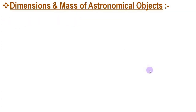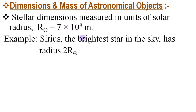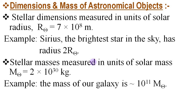To study the dimension and mass of astronomical objects, we have some measures. The sizes of stars or stellar dimensions are usually measured in units of solar radius, which is equal to 7 × 10⁸ meters. For example, Sirius — the brightest star in the sky — has a radius of 2 solar radii. Again, stellar masses are usually measured in units of solar mass, which is M☉ = 2 × 10³⁰ kg.